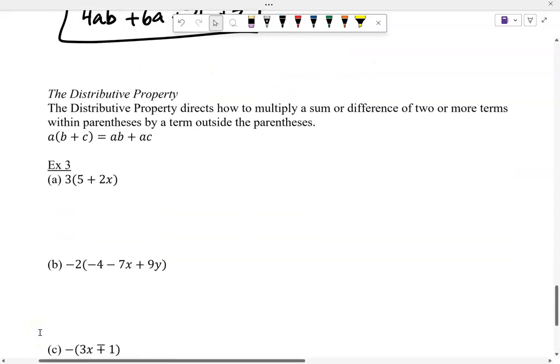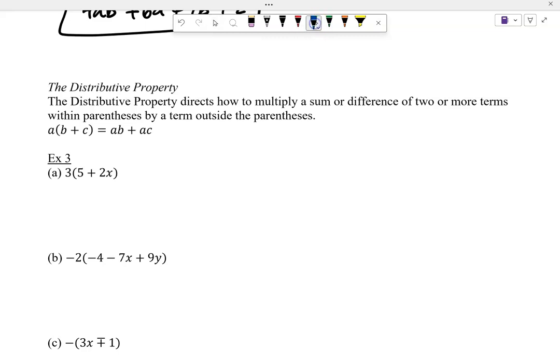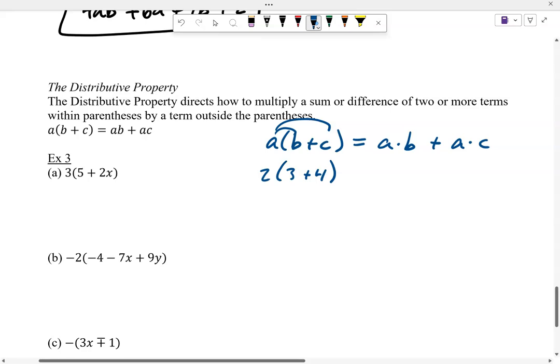The distributive property says if I have a times the quantity b plus c, I take a times the b. This is equivalent to a times b plus a times c. Let me give you an example of this. Let's say you had 2 times 3 plus 4. Now, I know you guys know how to do this. 3 plus 4, of course, is 7. So you get 14. Well, the distributive property says that is equivalent to 2 times 3 plus 2 times 4. Or 6 plus 8. See how either way you get 14?